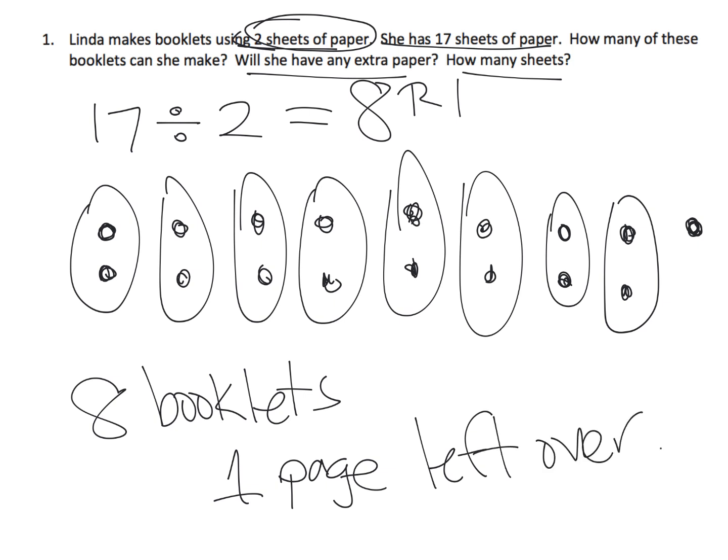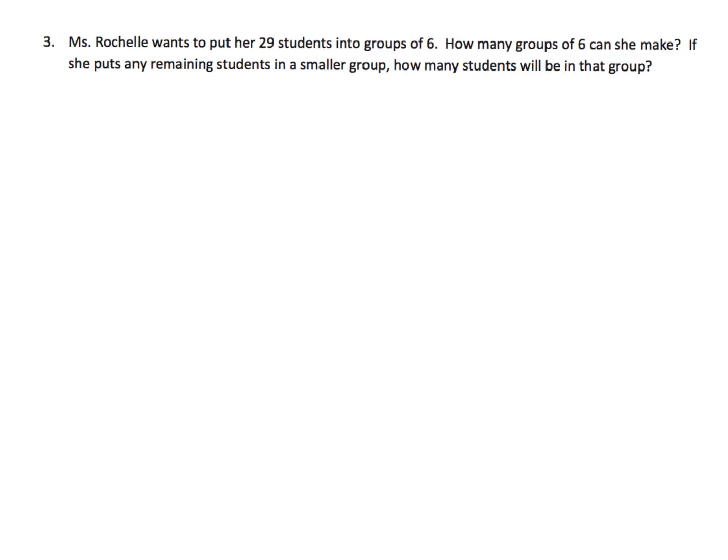So this is an example of measurement, because we know how many are in each group, and that it's a matter of counting how many groups we need. Another example, and I believe this one is also measurement technique. So this says, Miss Rochelle wants to put her 29 students into groups of six. How many groups of six can she make? So the idea is, she's going to do 29 divided by 6. But in this case, the groups have six in each of them.